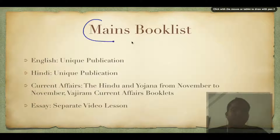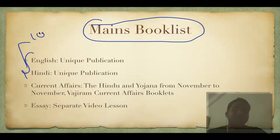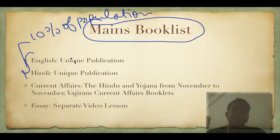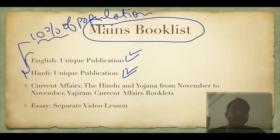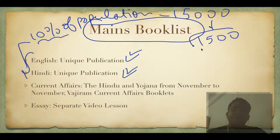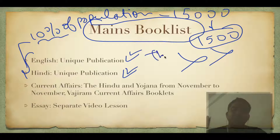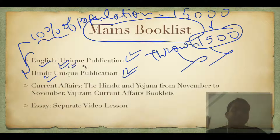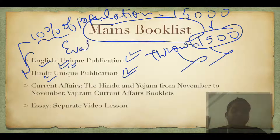Regarding the mains book list: approximately 10% of the mains population fails the qualifying language papers - including graduates from AIIMS and IITs. Last year, 15,000 gave mains so about 1,500 failed - their answer sheets are thrown away without being checked. Do not be in that 10%. Read the English book by Unique Publication and Hindi by Unique Publication. Buy them today and read for one or two days.